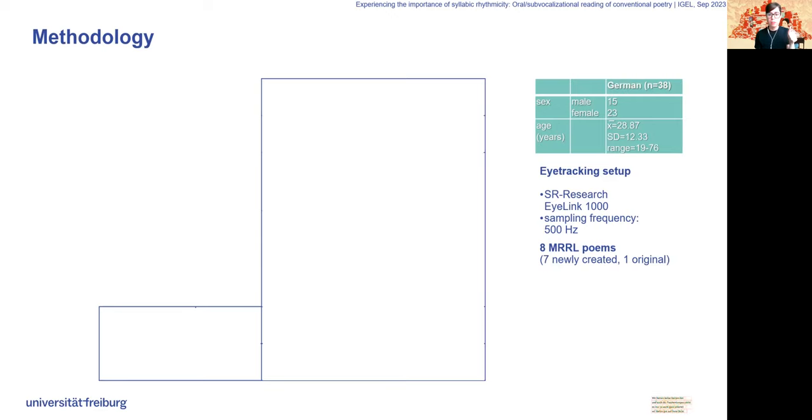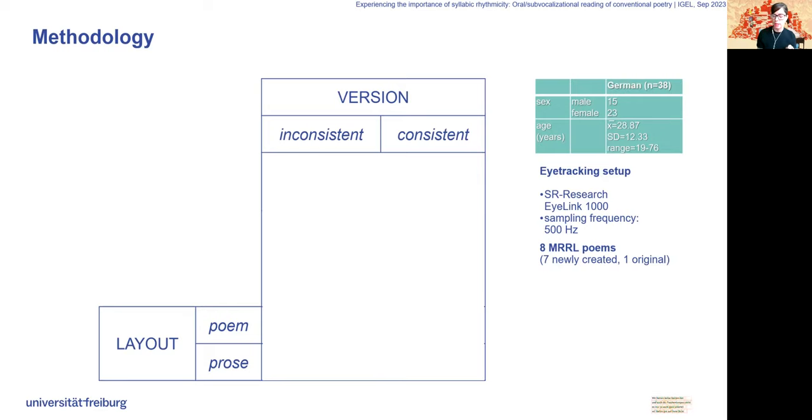Eight MRL poems were prepared as stimuli. Our predictors were: firstly, factor layout with two levels, poem and prose; secondly, factor version with two levels, consistent and inconsistent; and thirdly, within factor anomaly tag with three levels, namely metric, rhyme, and metric and rhyme.